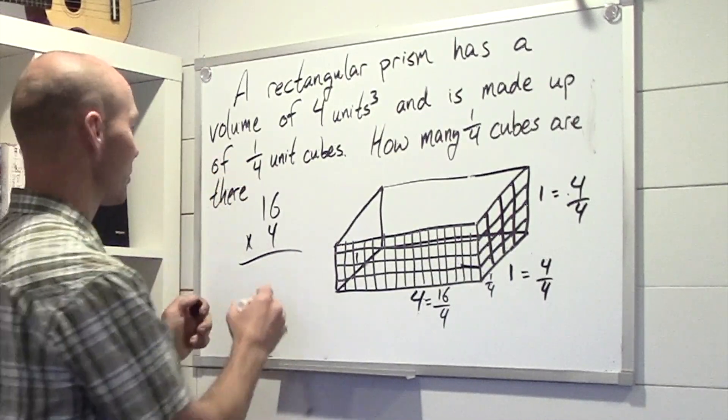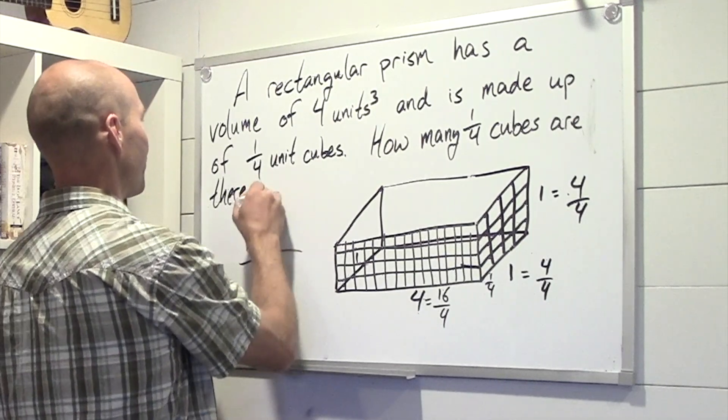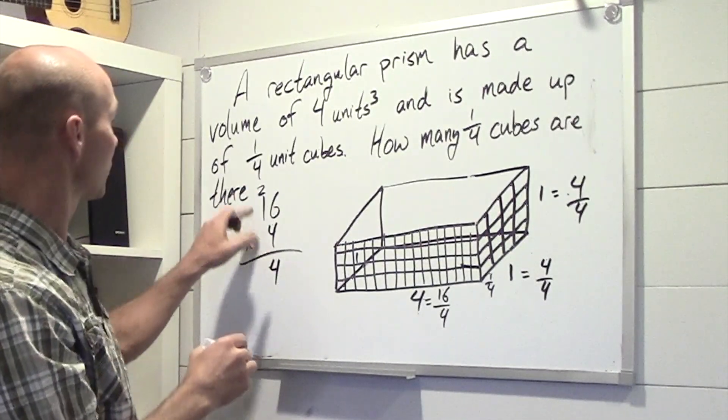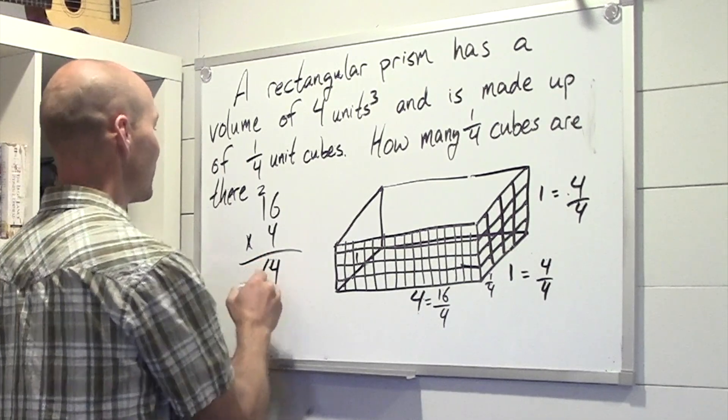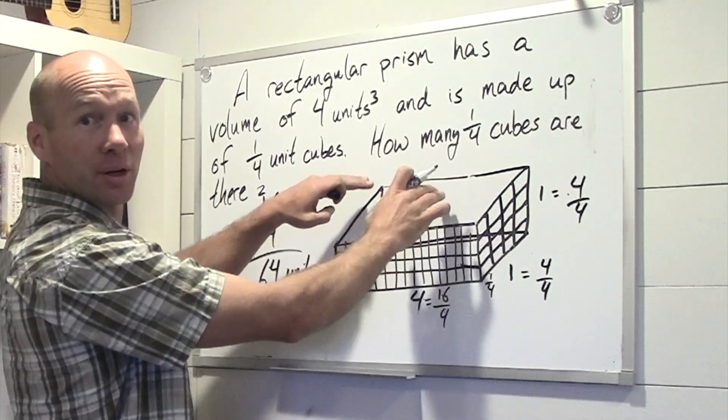16 times 4. 6 times 4 is 24. And 1 times 4 is 4 plus 2. We have 64 units at the very top row.